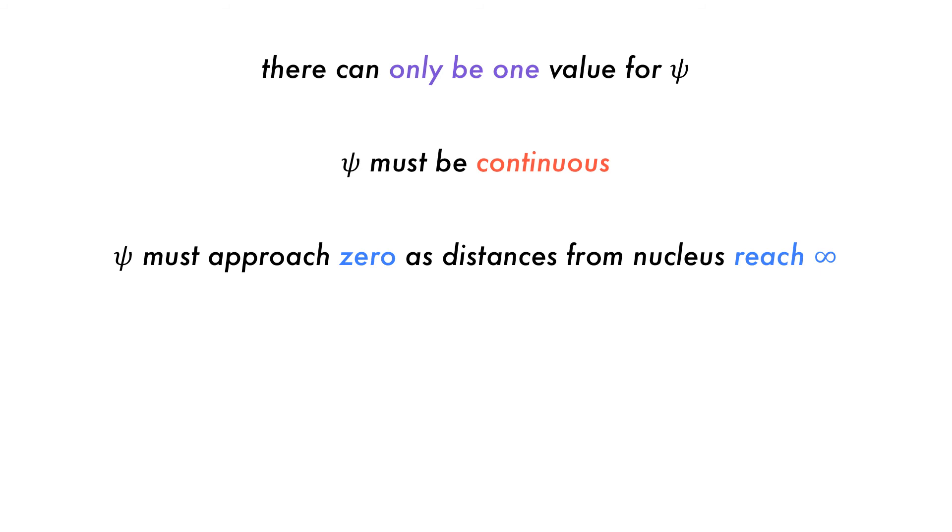Because atoms have a finite size, as the distance from the nucleus increases, the probability of finding an electron must decrease.